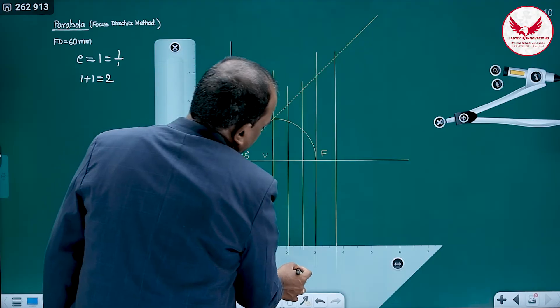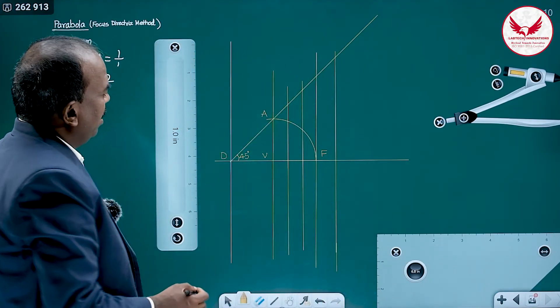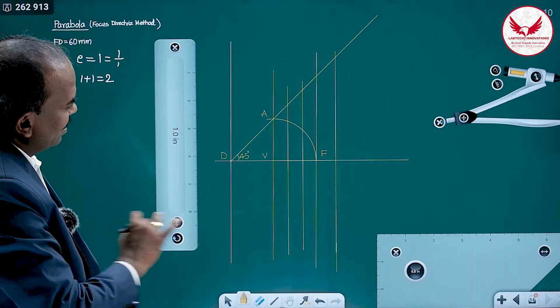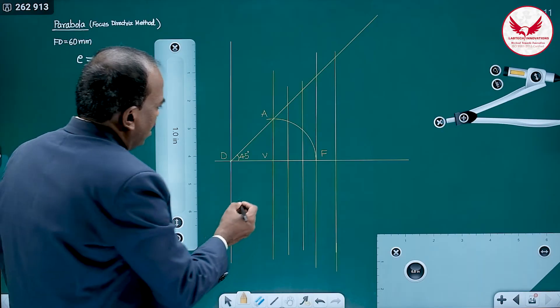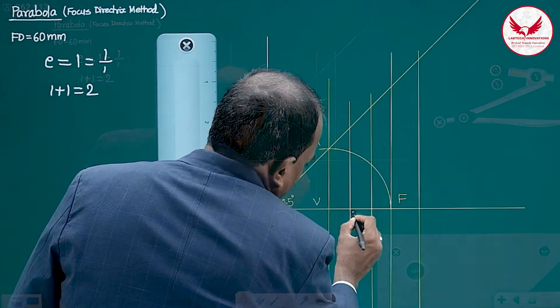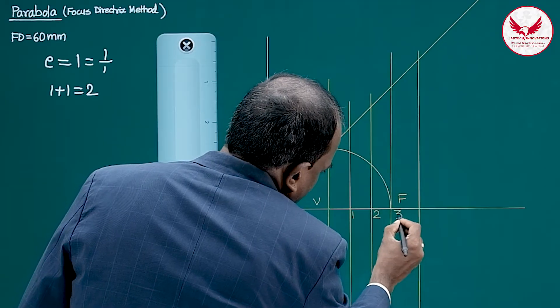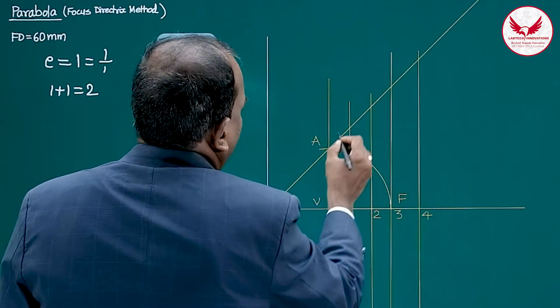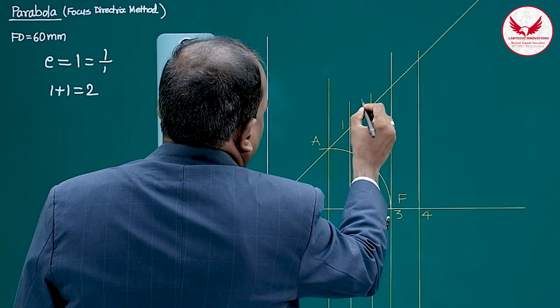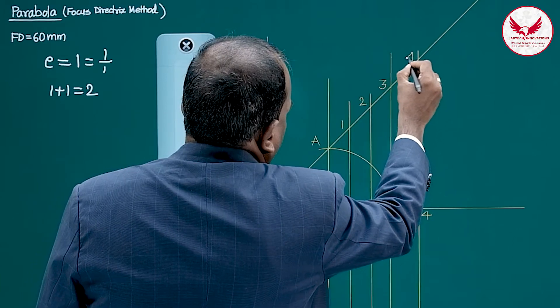Wherever these vertical lines intersect this horizontal line and that slant line, give the same names. I will suggest here it is 1, it is 2, at the focus 3 and here 4. Similarly, it is 1, it is 1, 2, 3 and 4.